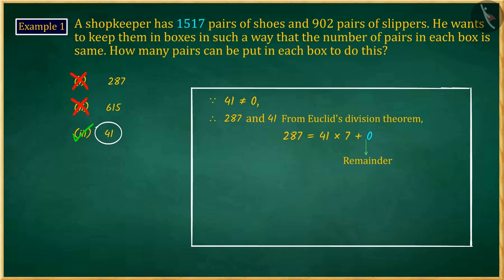So the process ends here. Since the divisor at this stage is 41, the HCF of 1517 and 902 is 41. So option 3 is correct.